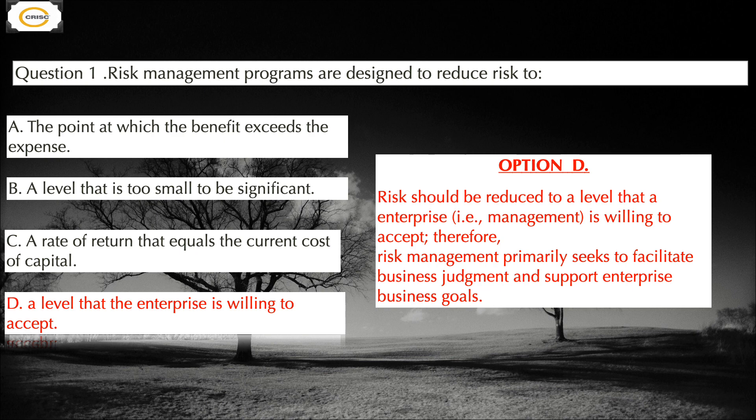Option D is correct — the level that the enterprise is willing to accept. Risk should be reduced to a level that management is willing to accept. Therefore, risk management primarily seeks to facilitate business judgment and support enterprise business goals. That's why Option D is correct.